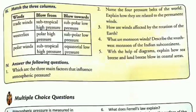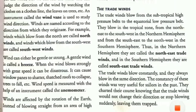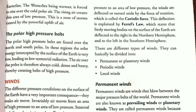Question 3: how are winds affected by the rotation of the earth? Come to page 47, very first column, last paragraph. Answer: winds are affected by the rotation of the earth. Instead of blowing straight from an area of high pressure to an area of low pressure, the winds are deflected by the force of rotation called the Coriolis force. This is explained by Ferrell's law, which states that freely moving bodies are deflected to the right in the northern hemisphere and to the left in the southern hemisphere.